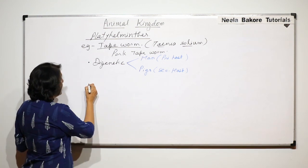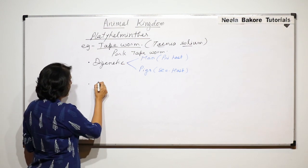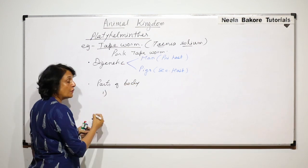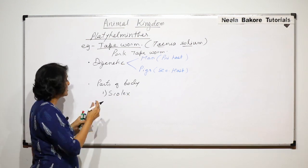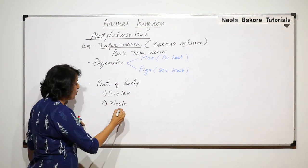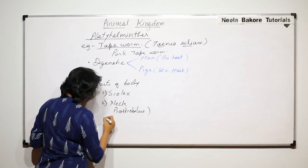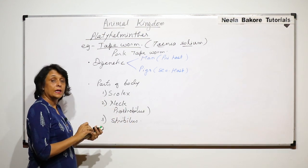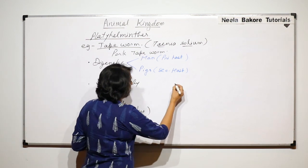The body is flat and is divided into three parts. The first part is known as scolex which is very much similar to a head-like structure. The second part is known as neck or it is also known as prostrobilus. And the third part is known as the strobilus. Let us draw the simple diagram so that we understand all these parts.